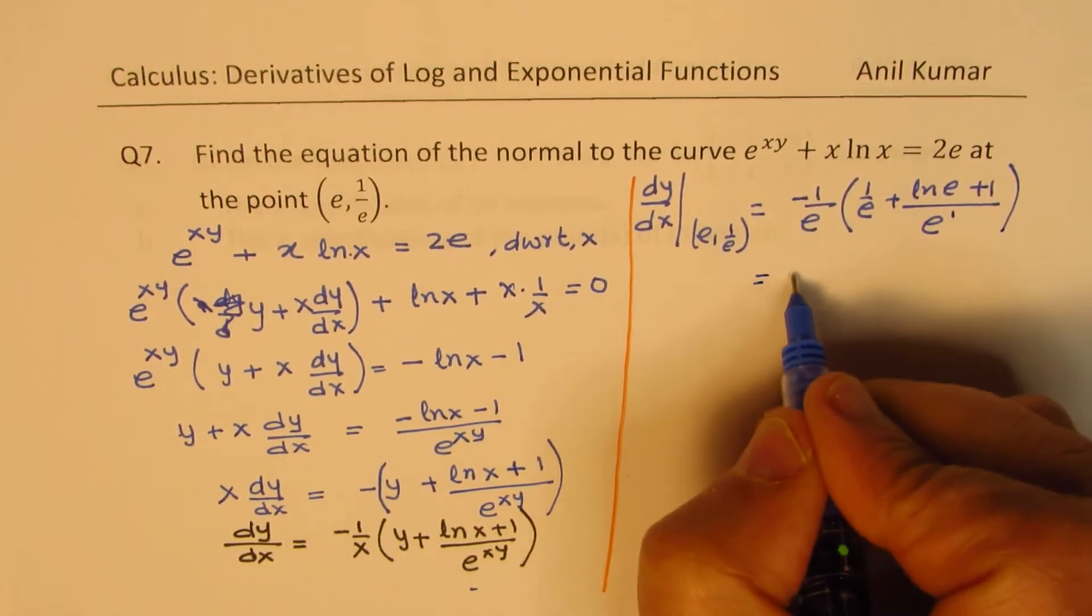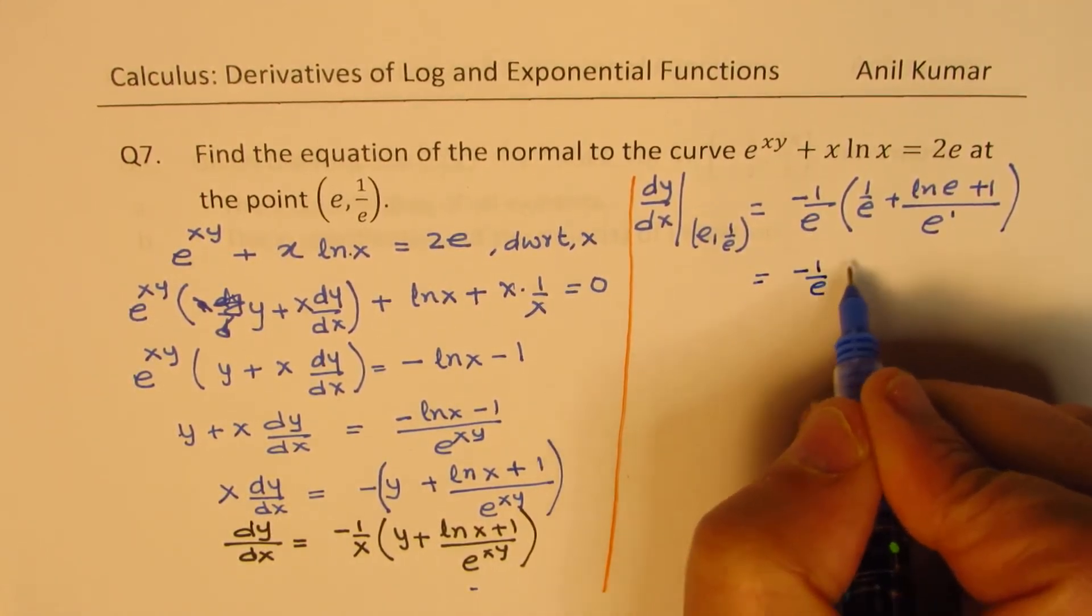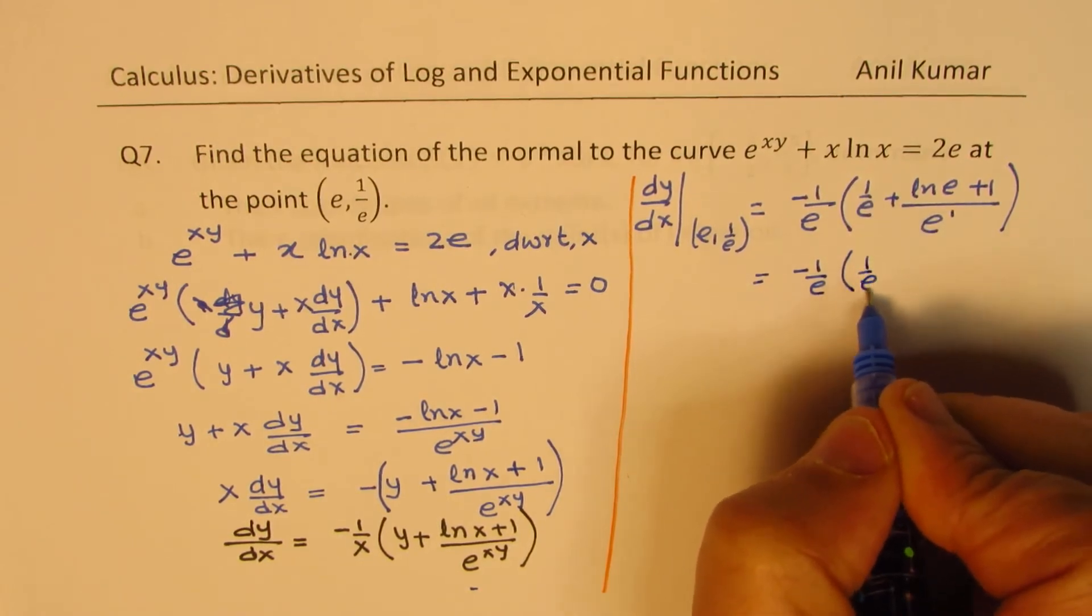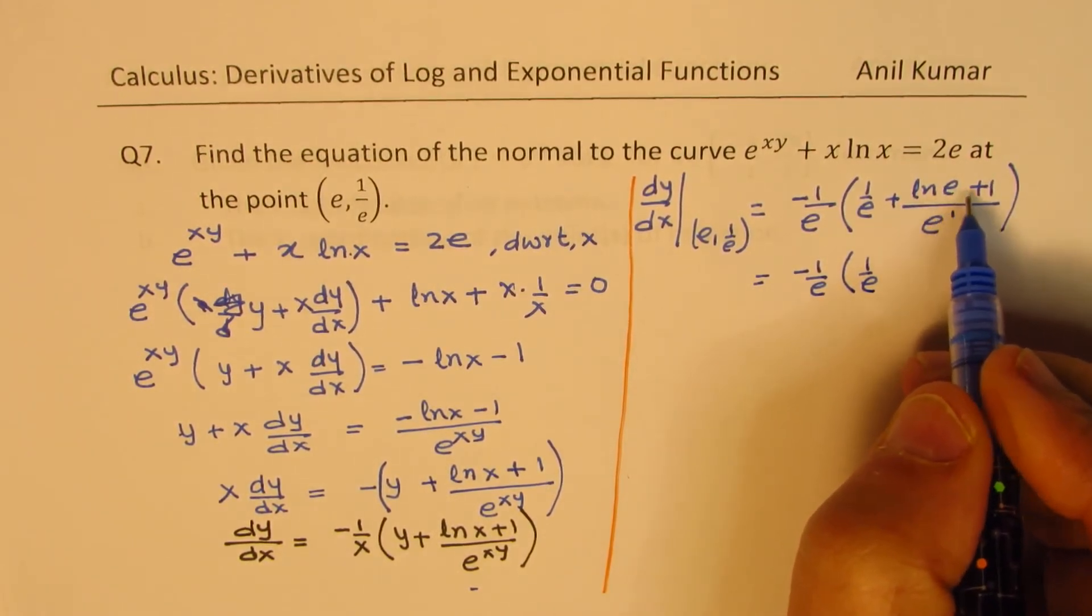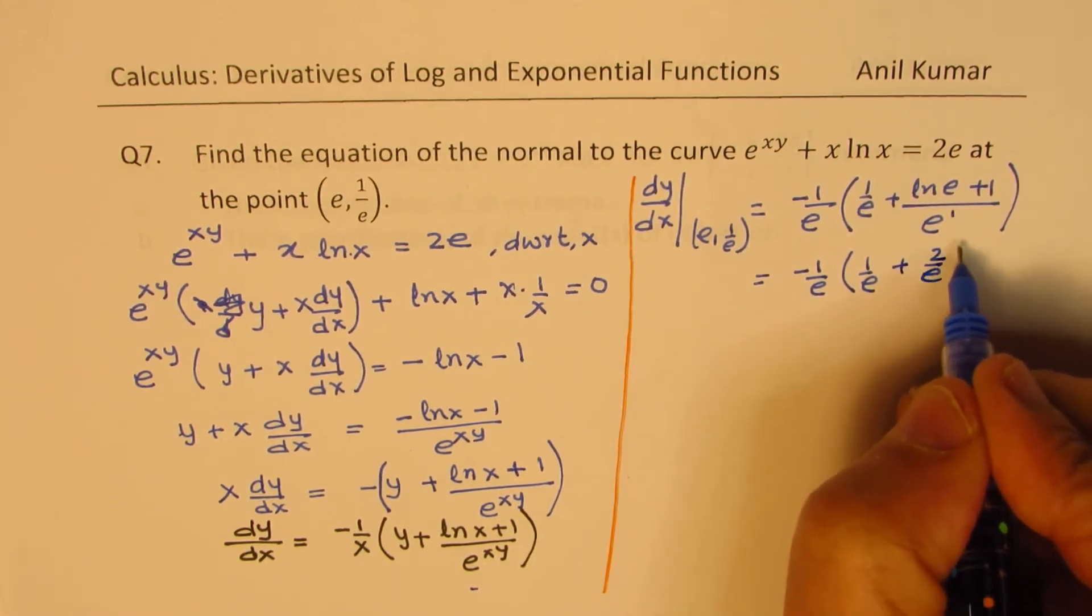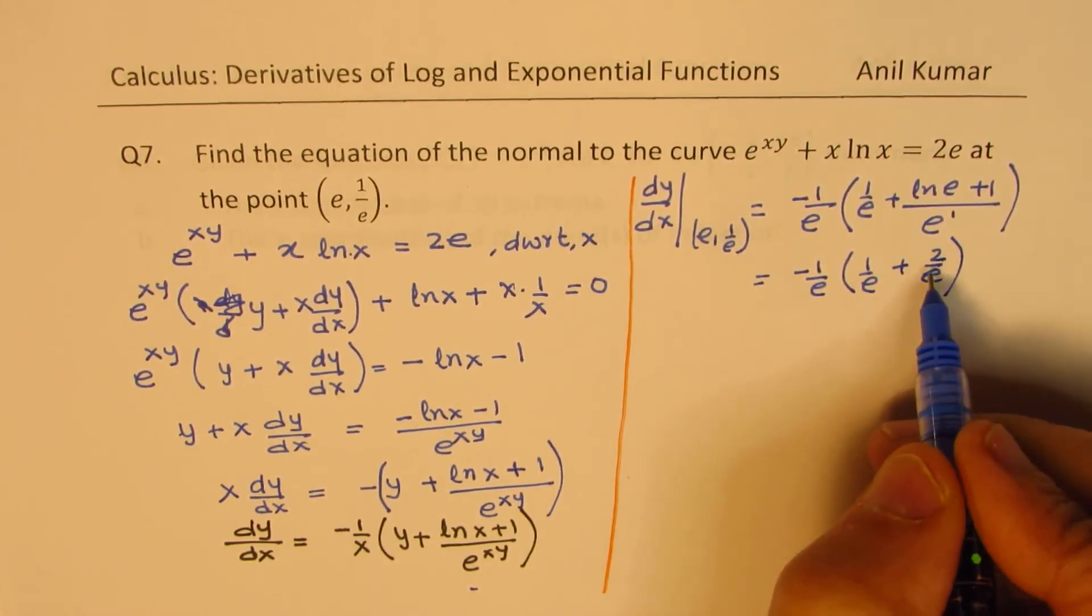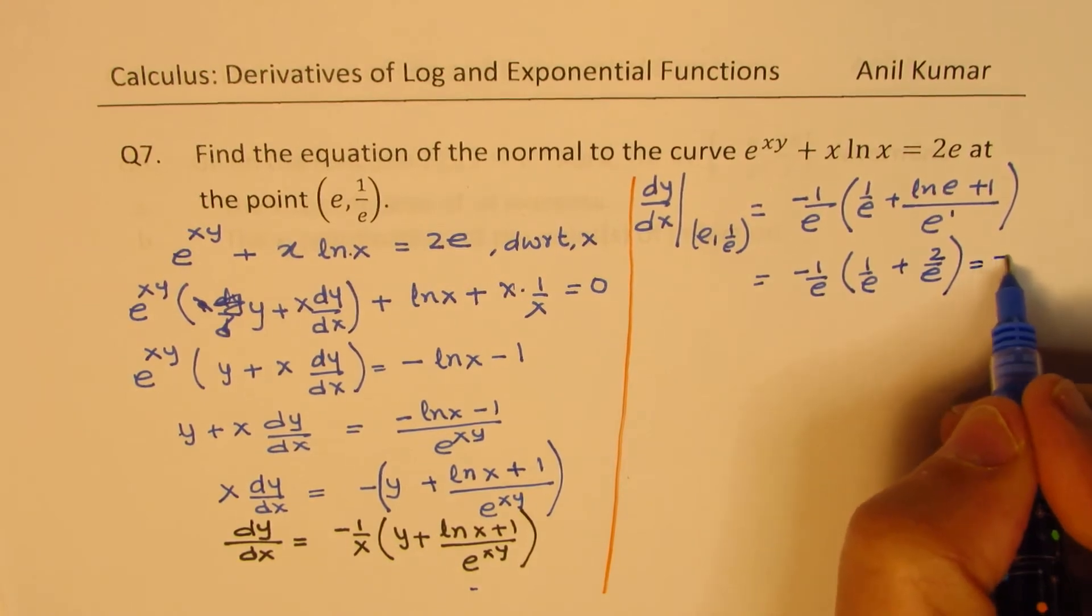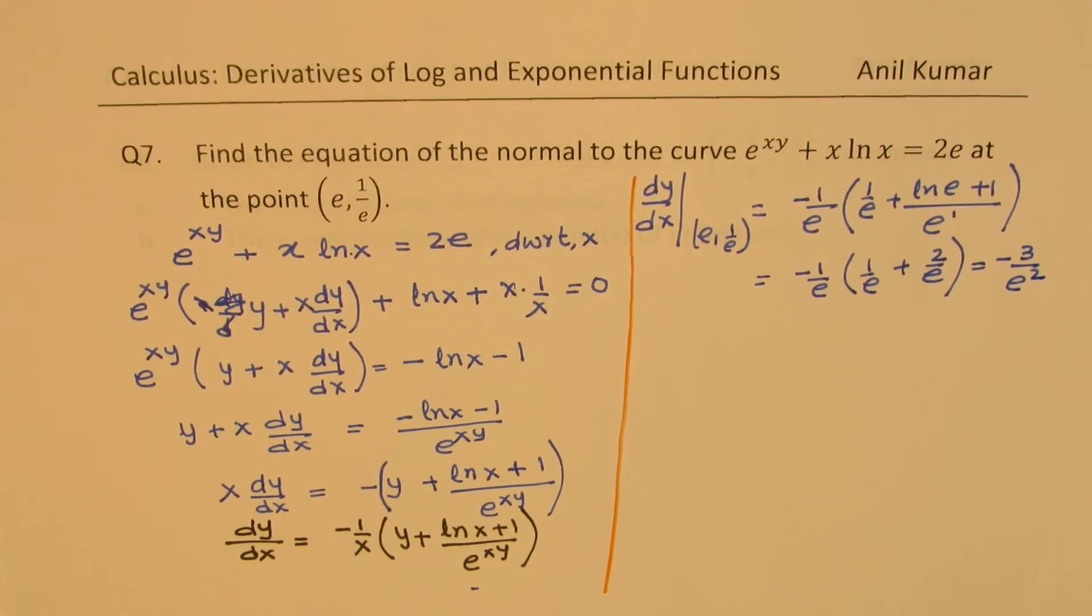So this value is -1/e, here we have 1/e, ln(e) is 1, so we get 2/e. That gives 2 plus 1 as 3, so we get -3/e^2. That is what the derivative is.